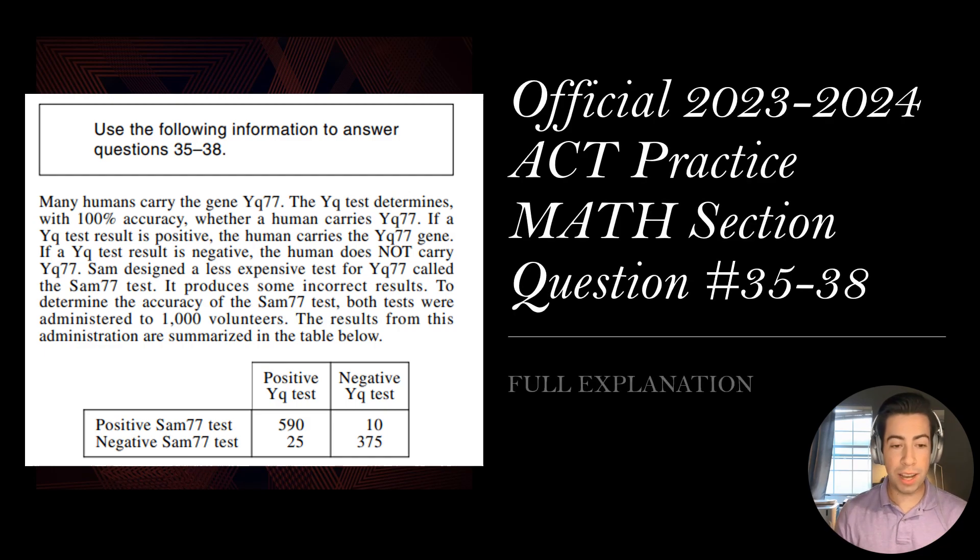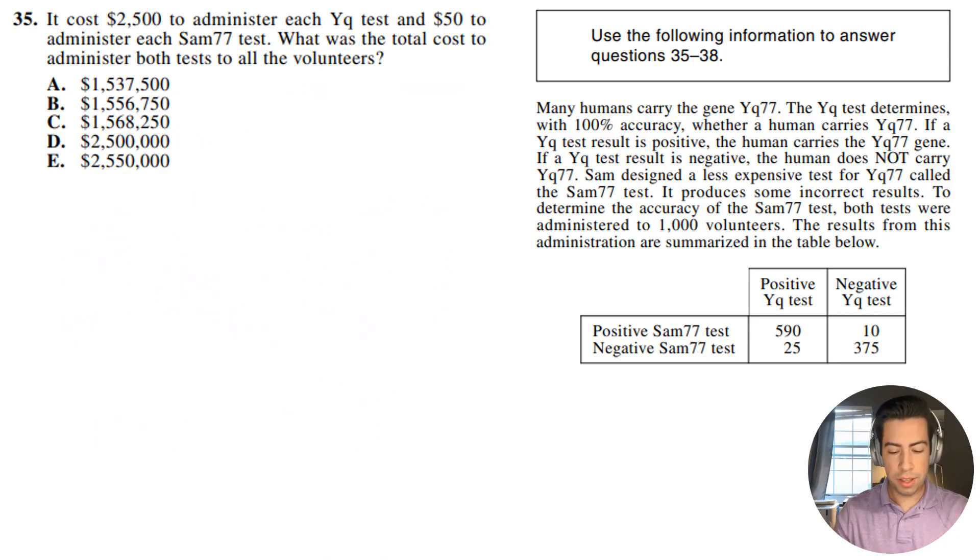All right, questions 35 through 38. Let's get right into it. It costs $2,500 to administer each YQ test and $50 to administer each SAM77 test. What was the total cost to administer both tests to all the volunteers?